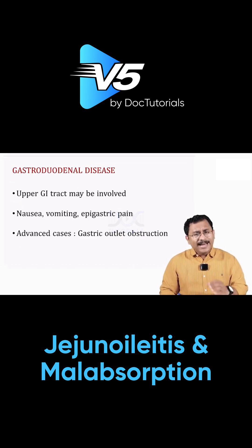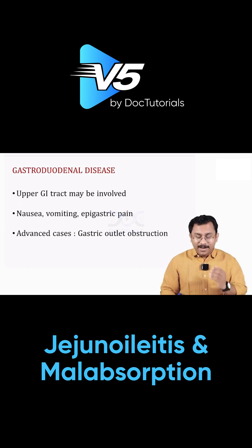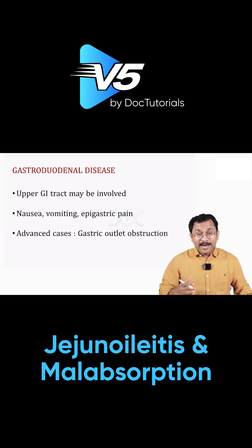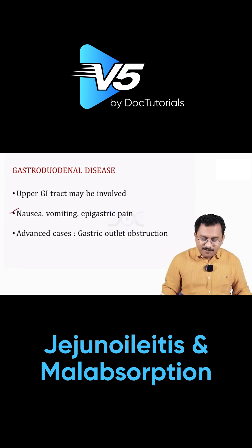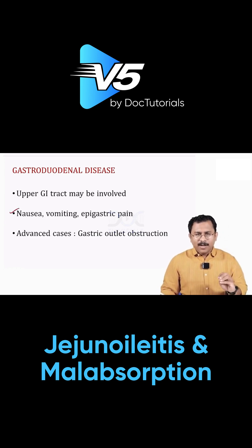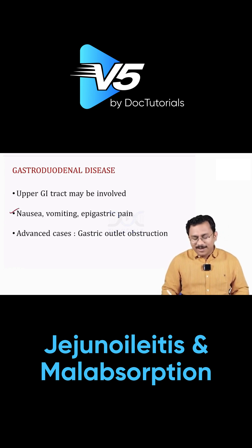Upper GI involvement can occur, though it is very rare. You can have gastroduodenal disease, in which case the patient has nausea, vomiting, and epigastric pain. Advanced cases of upper GI involvement can present with gastric outlet obstruction.